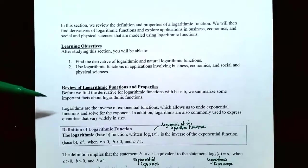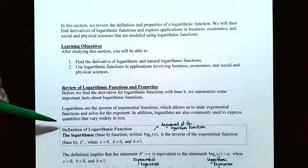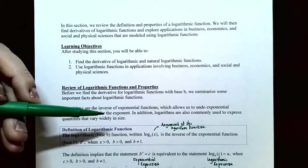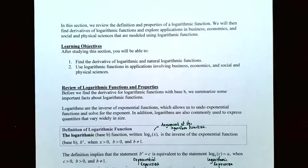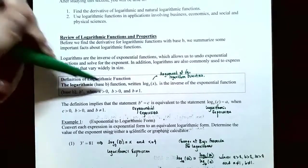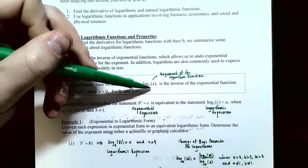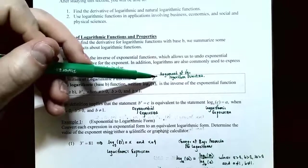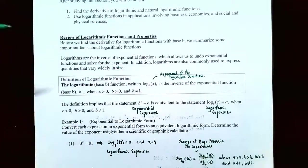Before we start finding the derivative of a logarithmic function with a base b, we need to summarize some of the important facts that you may have encountered in an algebra class about logarithm functions. Logarithms are actually the inverse of exponential functions, so it's good that we talk about logarithm functions right after the section about exponential functions. The logarithmic function base b, written as log subscript b of x — what's inside the parentheses is called the argument — and the logarithm is simply the inverse of an exponential function, also base b.